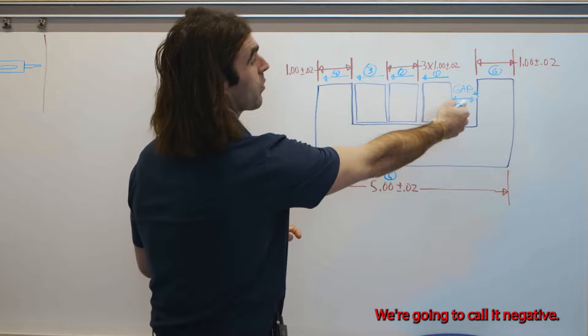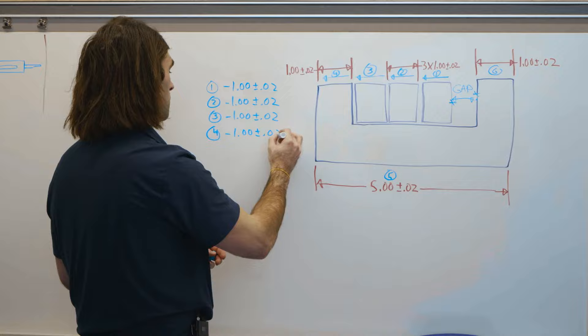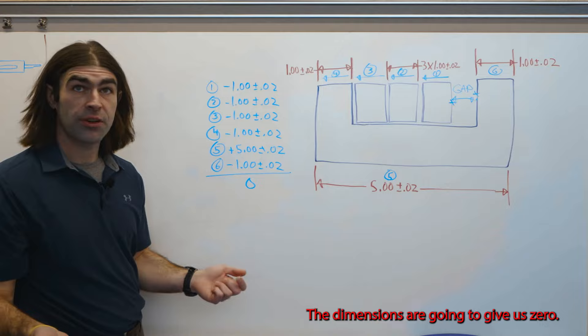So the way we figured out mathematically, we're going to take this first dimension. We're going to call it negative. So anything going left of the gap is negative. Anything going right is going to be positive. So we've got all our dimensions right here and all of our tolerances. So we're going to add them up. The dimensions are going to give us zero.